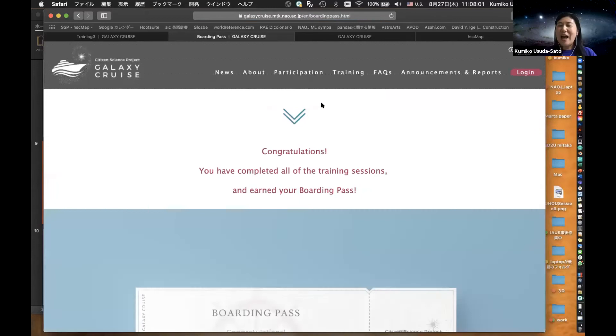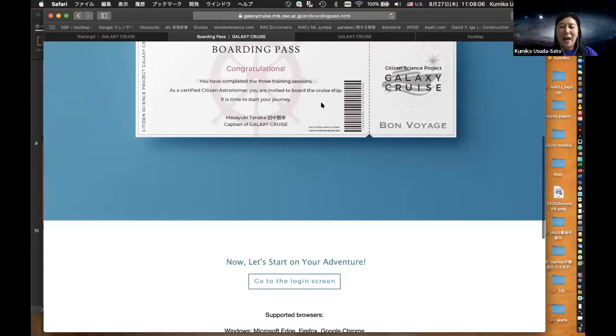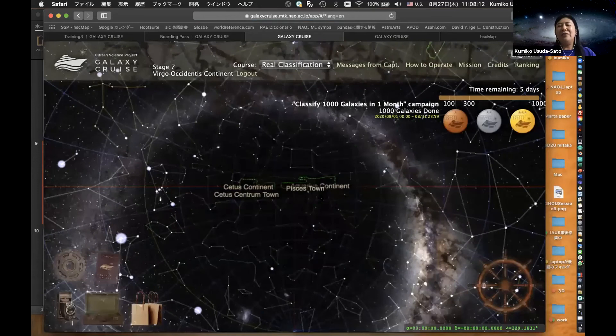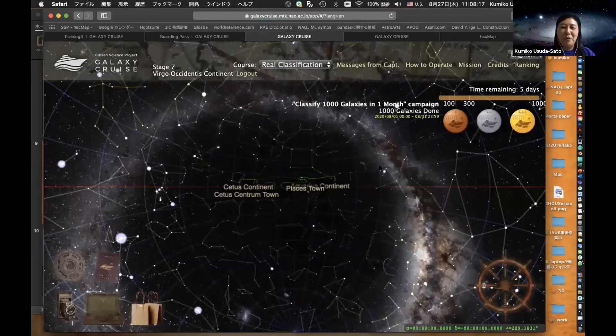After you answer all five questions, please click here. I have completed all the training sessions, and yay, you got the boarding pass! Let's get on board. Click here to go to the login screen. Actually, I already logged in. So this is the welcome page of the classification page. You see the same shape. In the green area, the cosmic image is hiding.